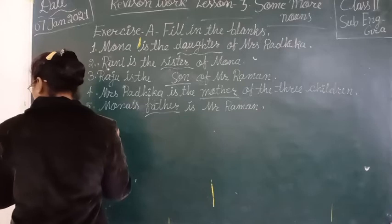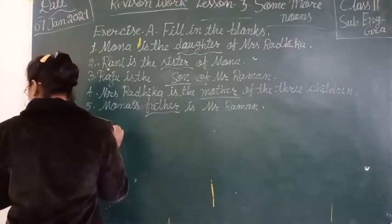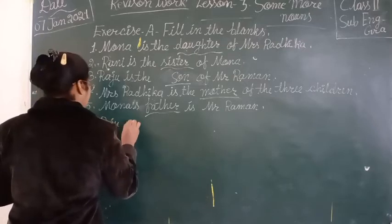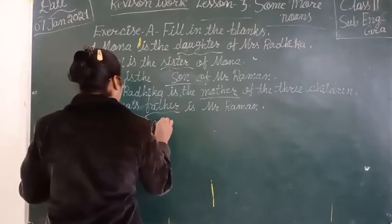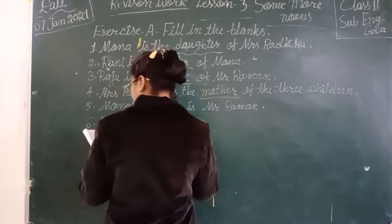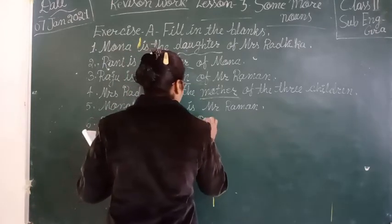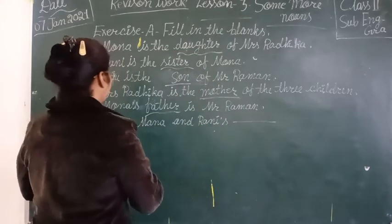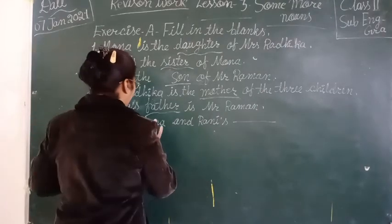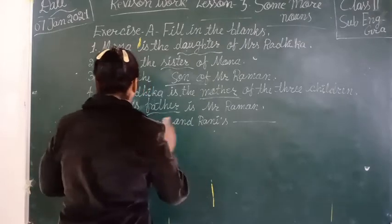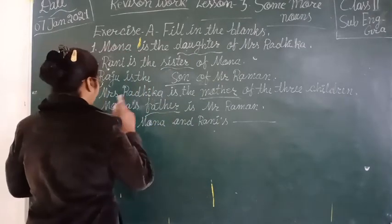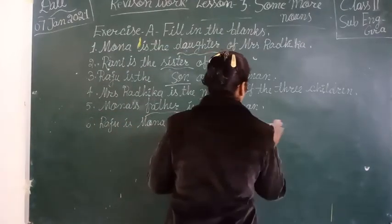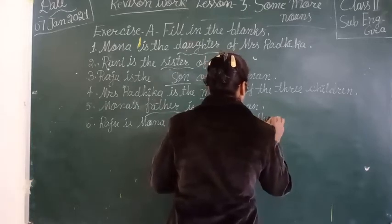Six. Raju is Mona and Rani's blank. Means Raju ek ladka hai. Mona aur Rani kya hain? Raju ki sister hai. Toh Mona aur Rani ki Raju kya lagega? Brother. Yahan par brother.